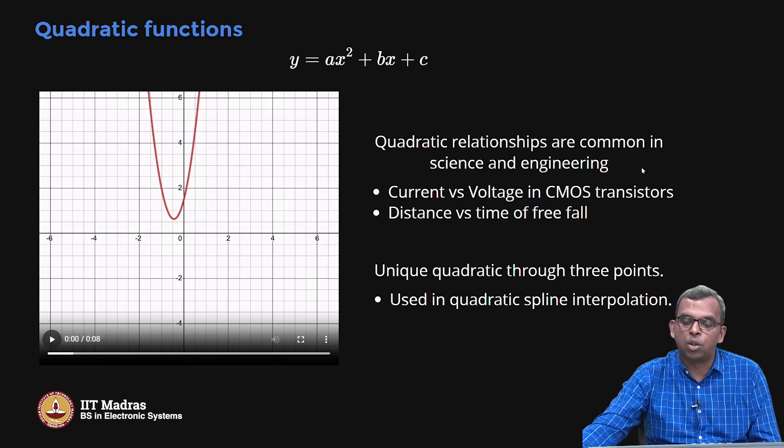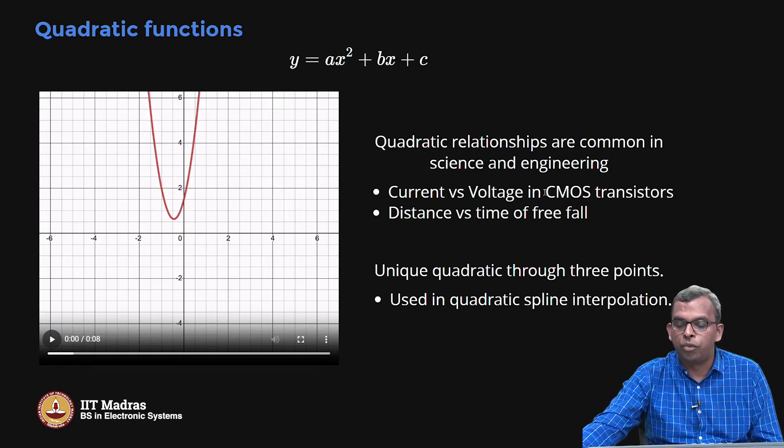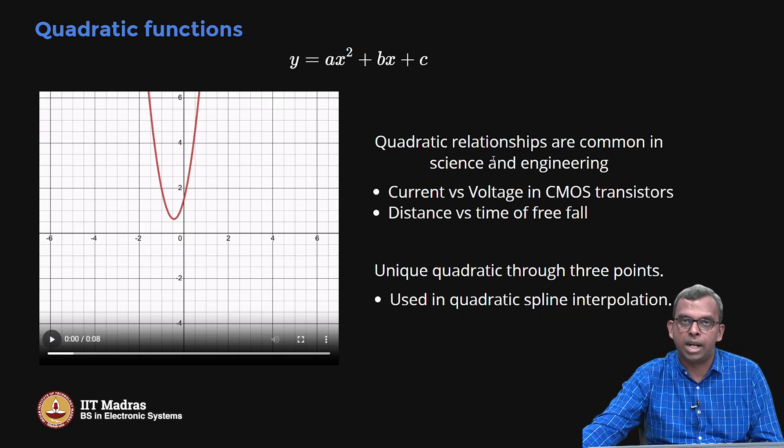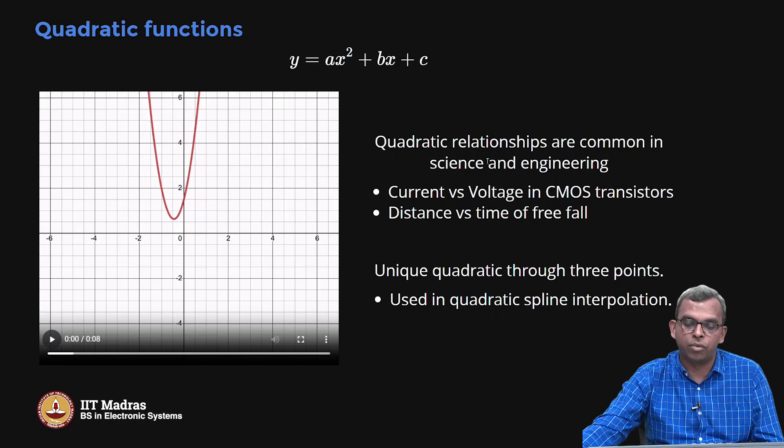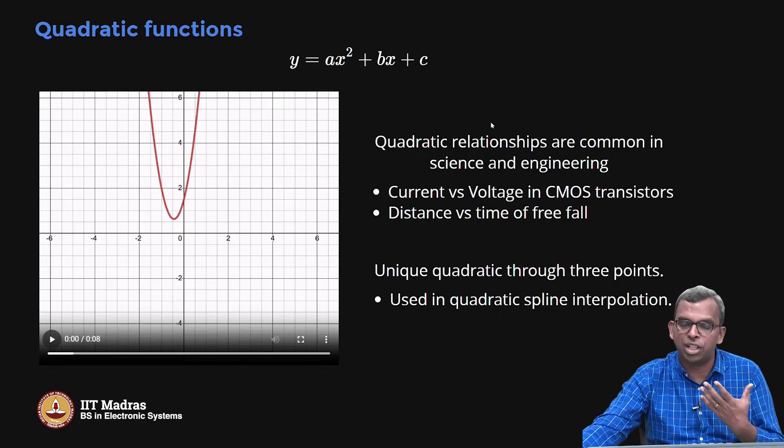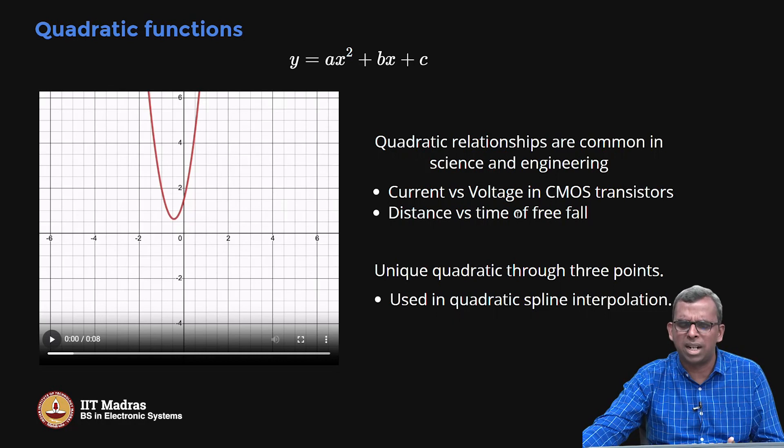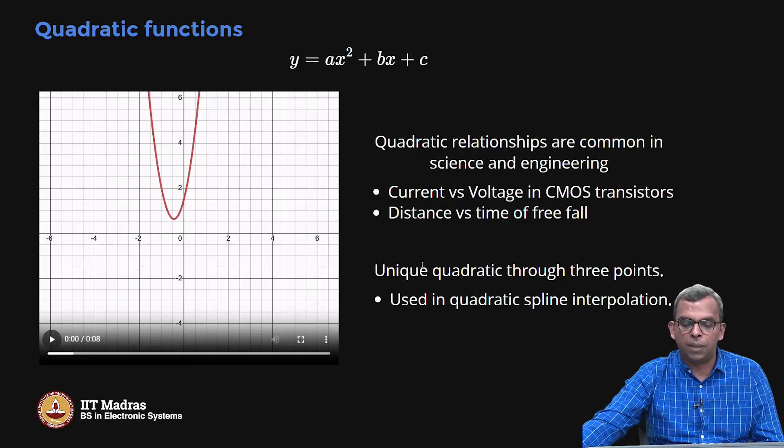Now quadratic relationships are also very common in science and engineering. In electronic systems, for instance, if you look at CMOS transistors, the current versus voltage is modeled as quadratic in some regions and that is a very, very popular, very useful model. So quadratic equation model can be used quite often in science and engineering. A distance versus time of free fall, for instance, also, that is how quadratic shows up very naturally.